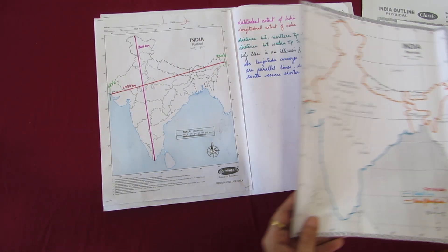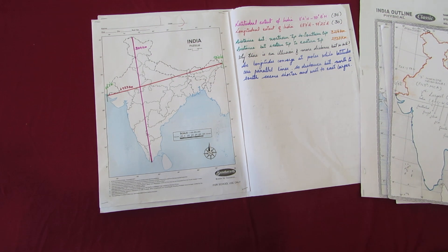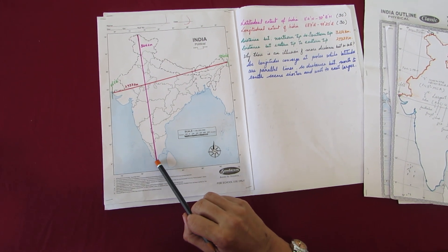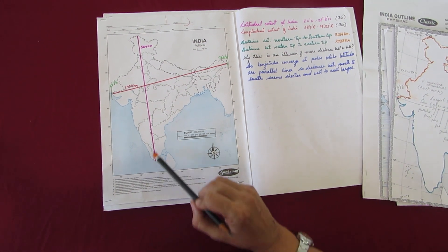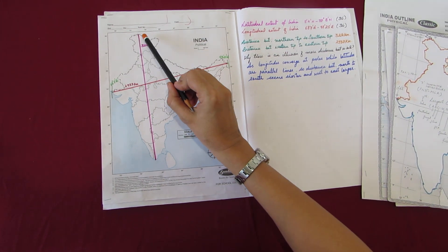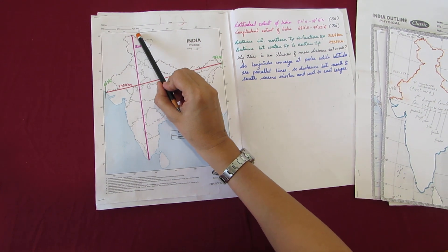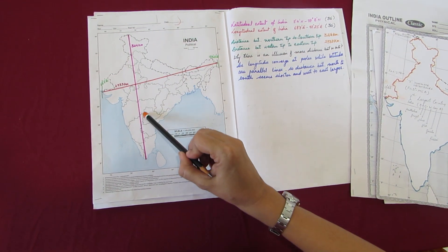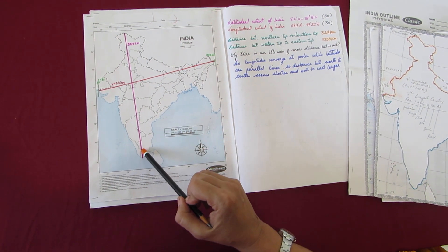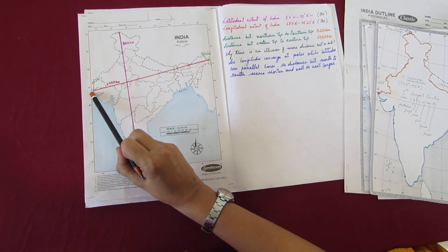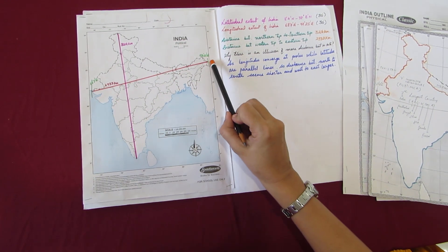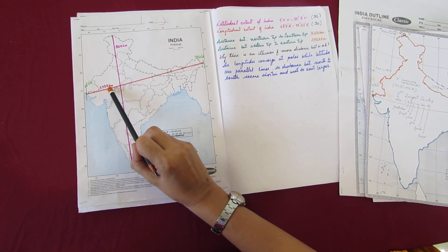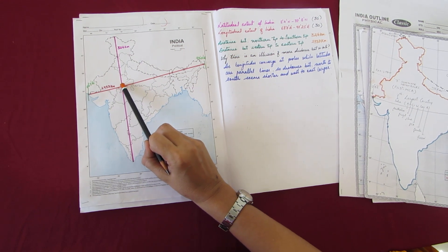The southernmost tip of the mainland of India is Kanyakumari and the northernmost tip is in Jammu Kashmir. The distance between them is 3,214 kilometers. From the westernmost tip to the easternmost tip of India, the distance is 2,933 kilometers.